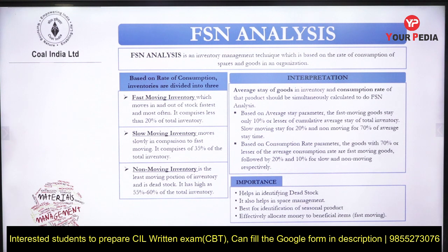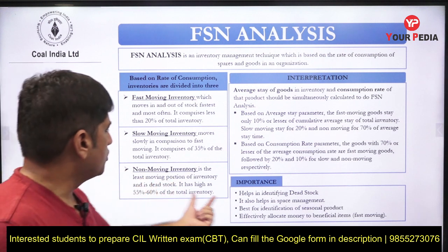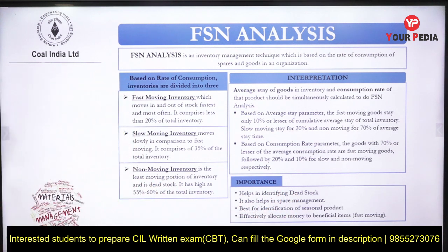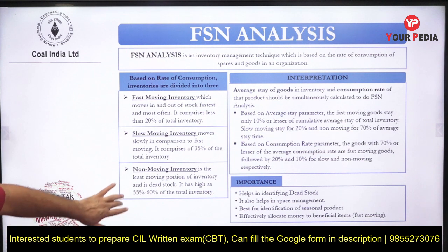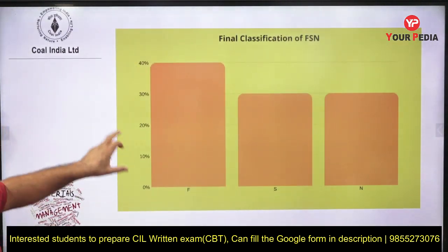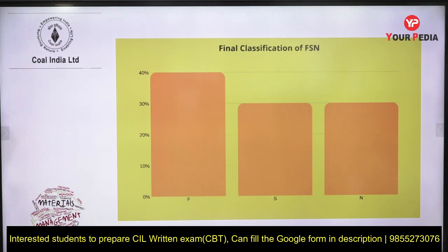Fast moving items are normally less than 20 percent of inventory. Then there are slow moving and non-moving items. Non-moving items — surprisingly — can be 50 to 60 percent of total inventory, which is actually dead stock. Space management improves greatly if we identify non-moving items and take action on them. FSN classification is: fast moving, slow moving, and non-moving.